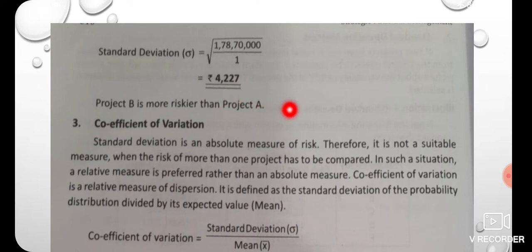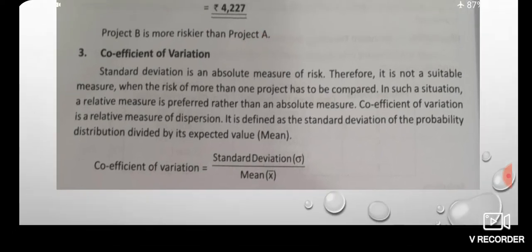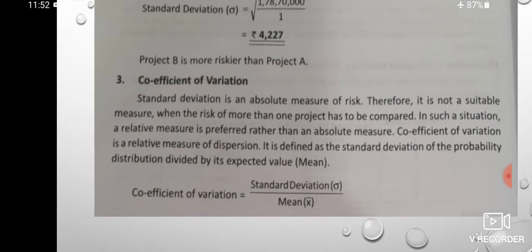Project B is more risky because the standard deviation is lower for Project A. Therefore, Project A is selected as the less risky project.